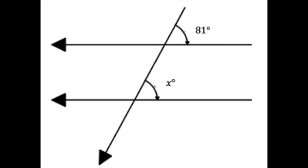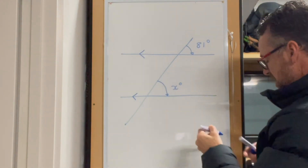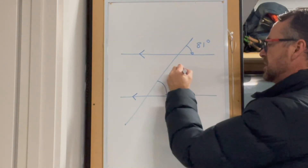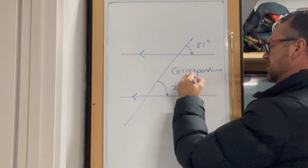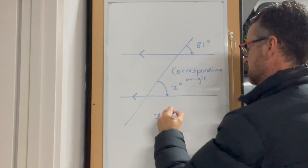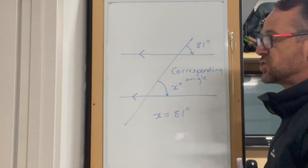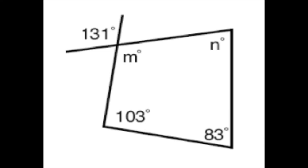The next question has two parallel lines. We have 81 degrees here and a corresponding angle which is x. Simply, x equals 81 degrees, with the reasoning that it is a corresponding angle in this particular diagram.